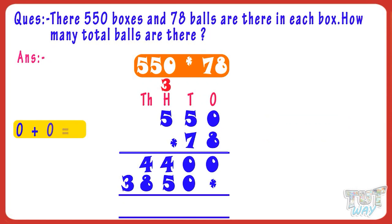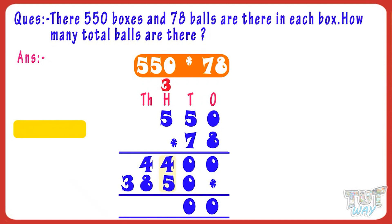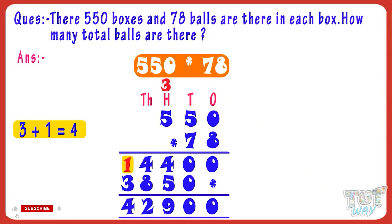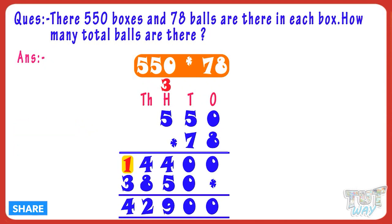Now add the products. 0 plus 0 equals 0. 0 plus 0 equals 0. 4 plus 5 equals 9. 4 plus 8 equals 12. Write 2 in the sum and carry over 1 to the next place. 3 plus 1 carry equals 4. 42,900 is the product of 550 and 78.